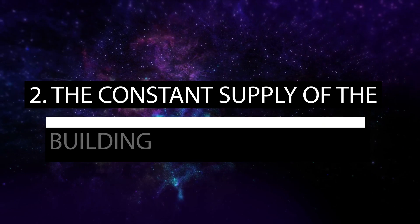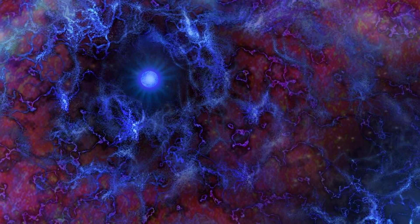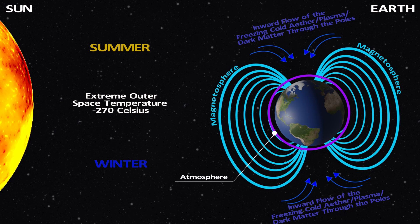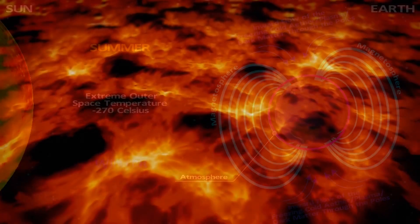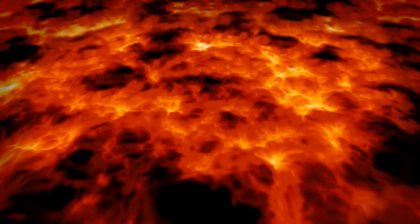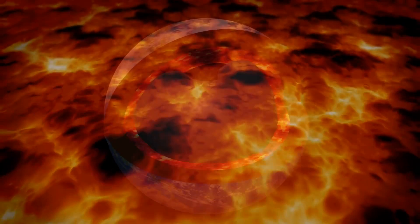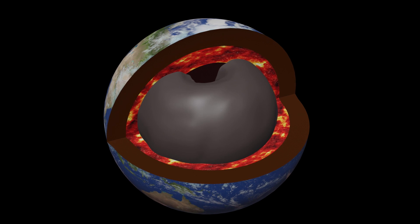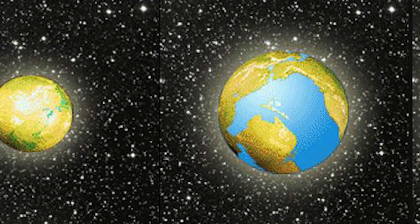Factor 2: The Constant Supply of the Building Blocks of Matter. Atomic matter is composed of subatomic matter, also known as the ether or dark matter. The subatomic energy coming in through the poles from outer space into the inner core and inner earth layers constantly supplies the molten lava region with the subatomic building blocks of matter. This keeps the lava region increasing in volume and expanding by generating more molten mass, in constant mass volume growth.